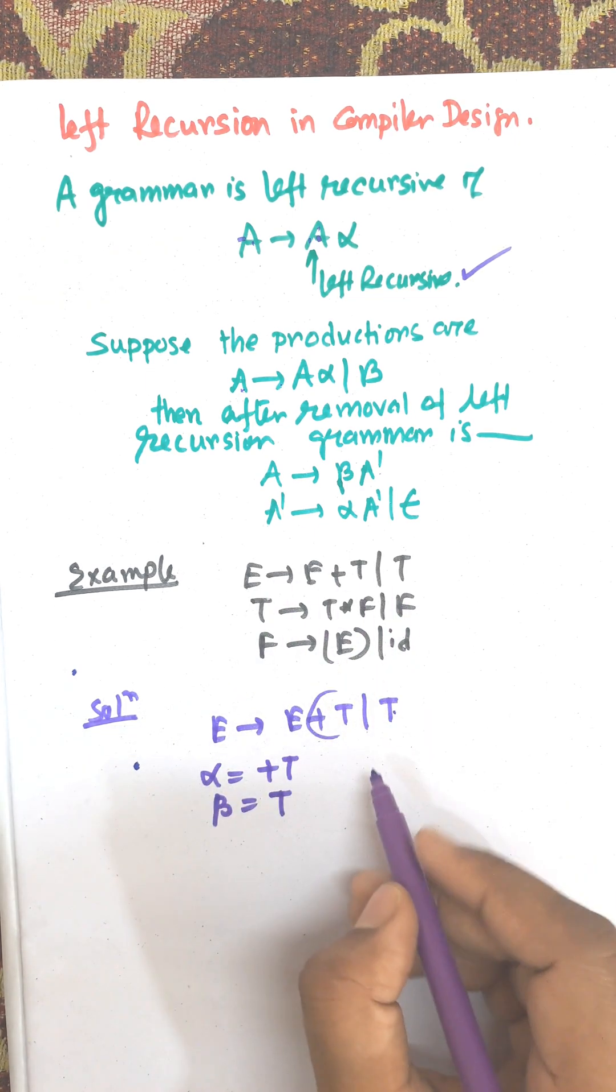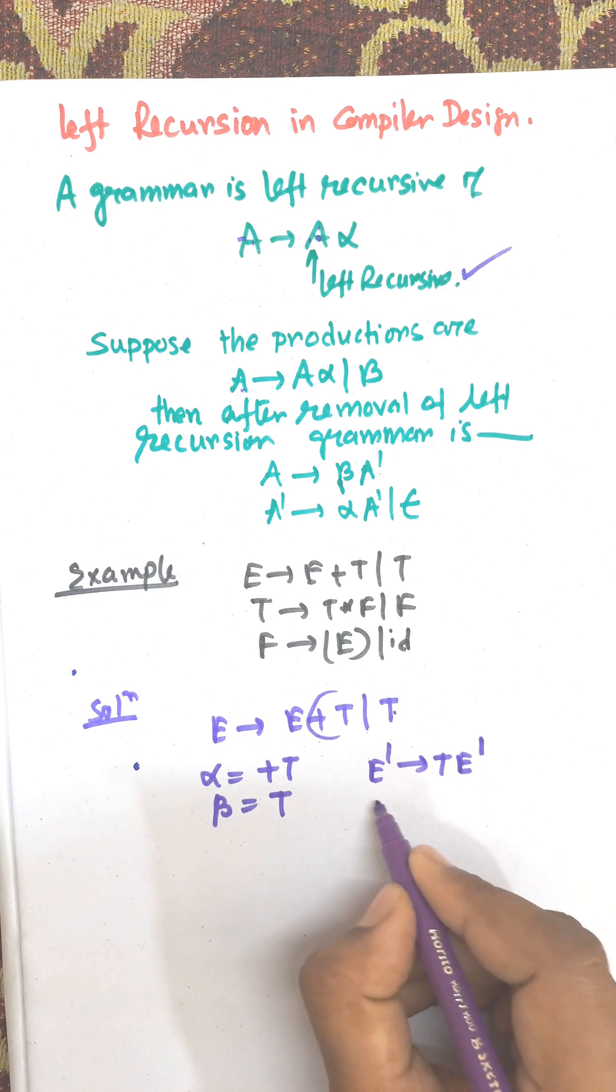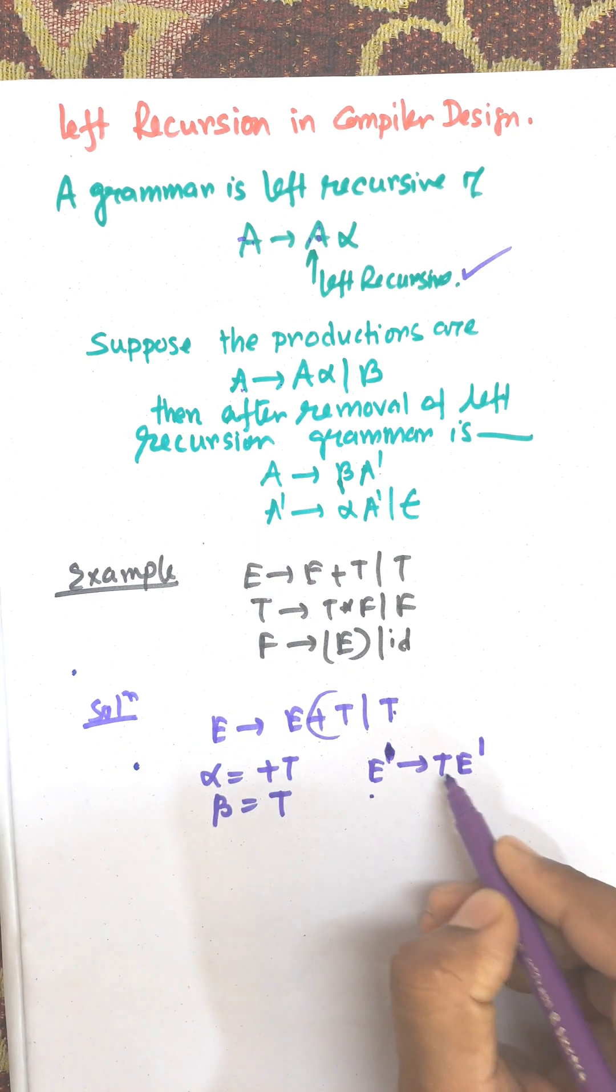So according to the rule, E = βE'. Beta is T, so that is TE'. And E' equals... that is E', from E → TE'.